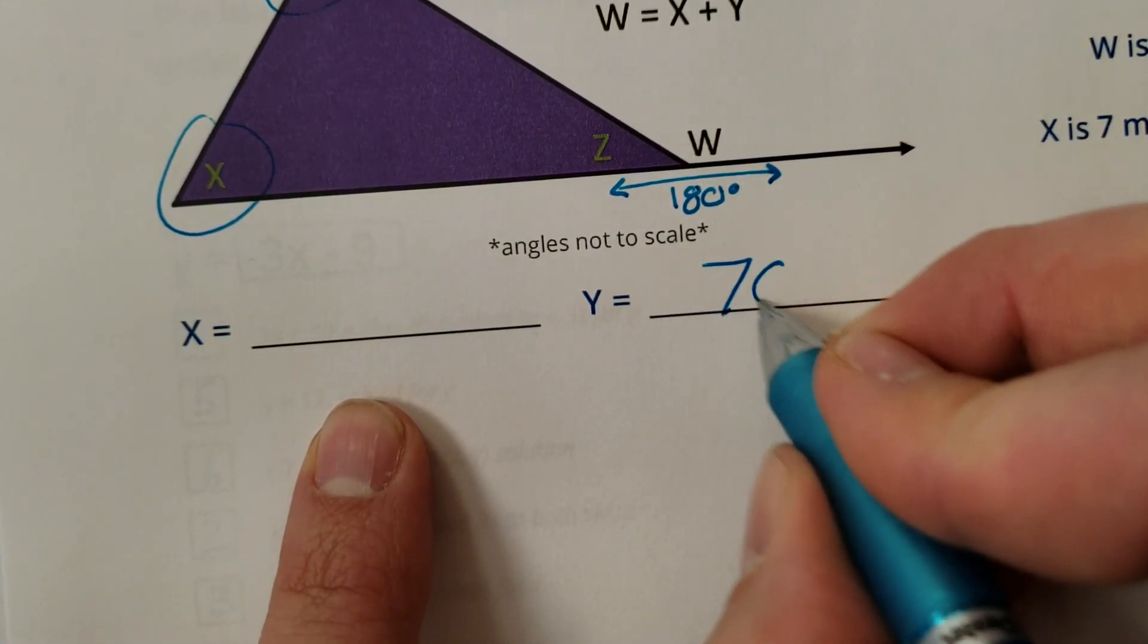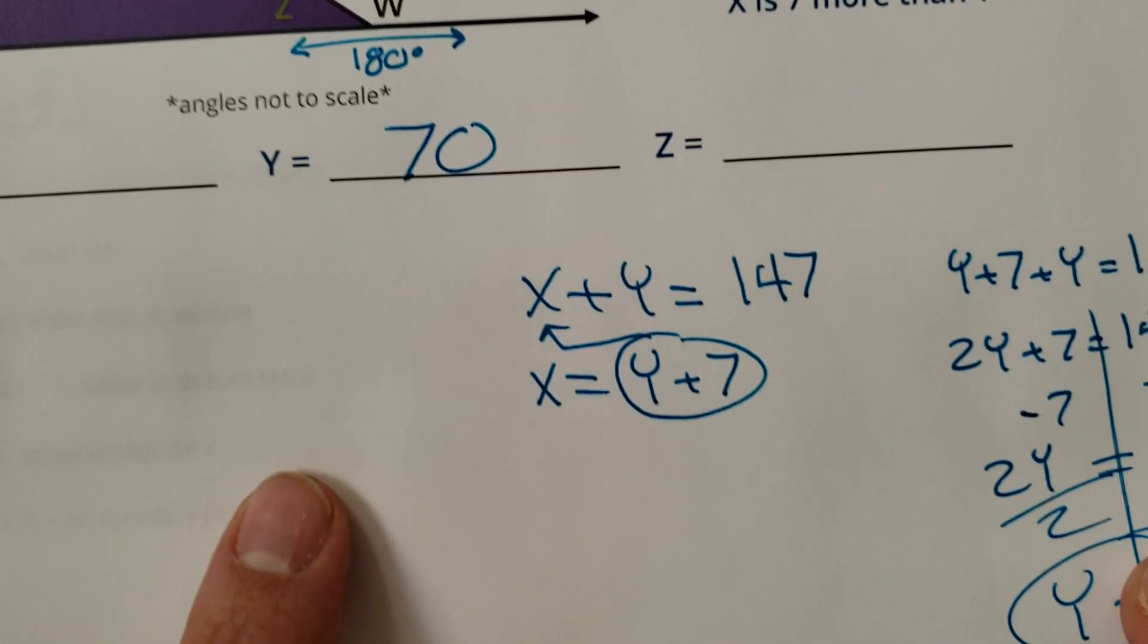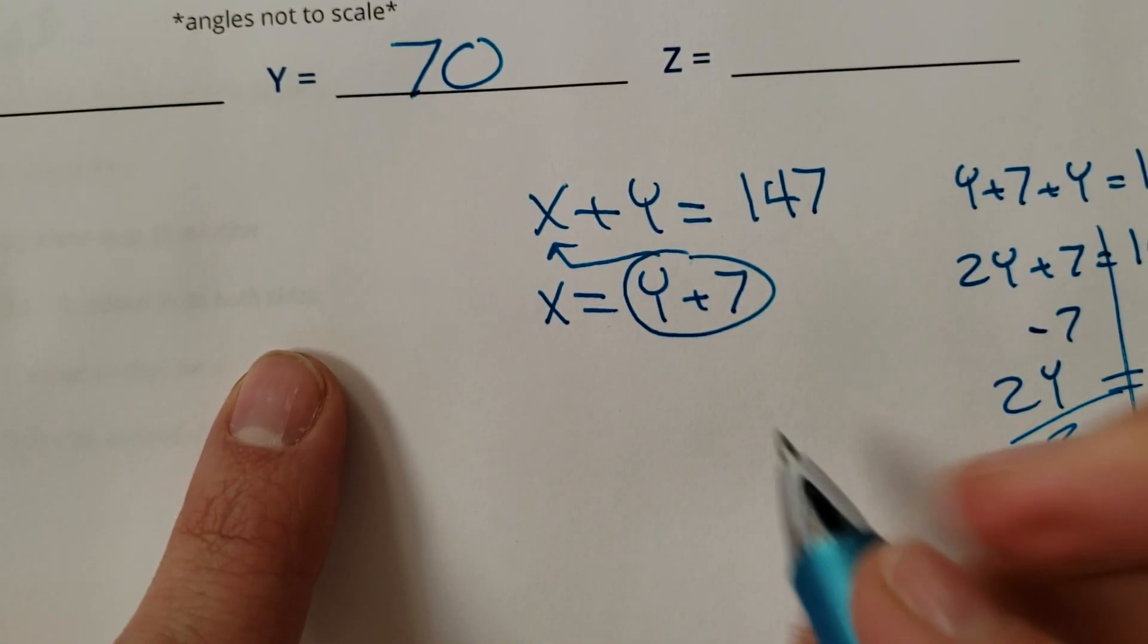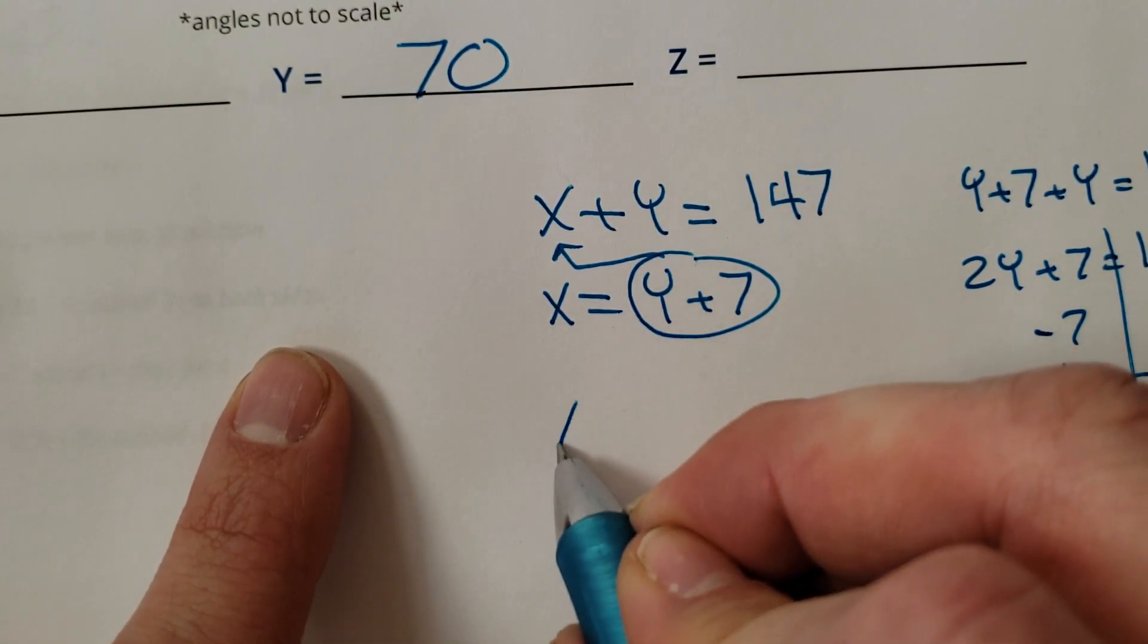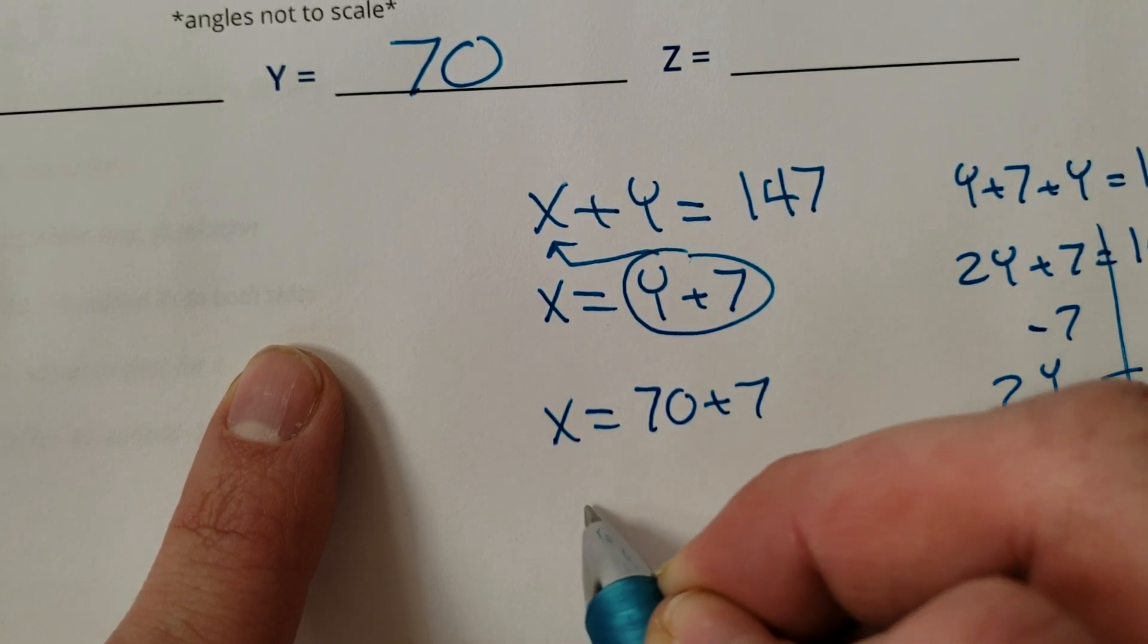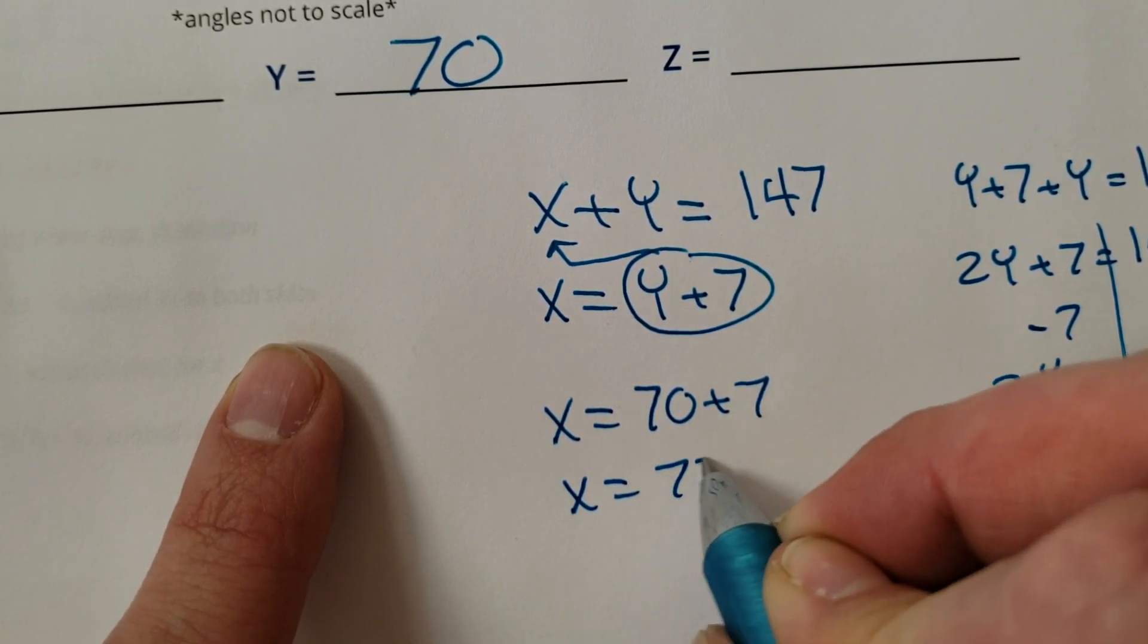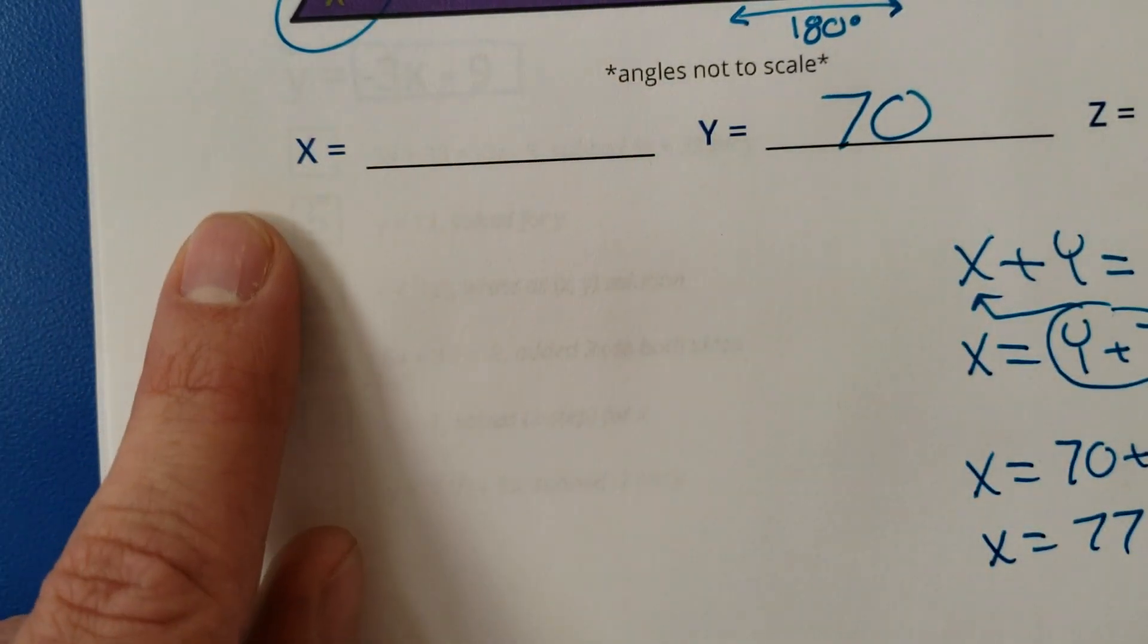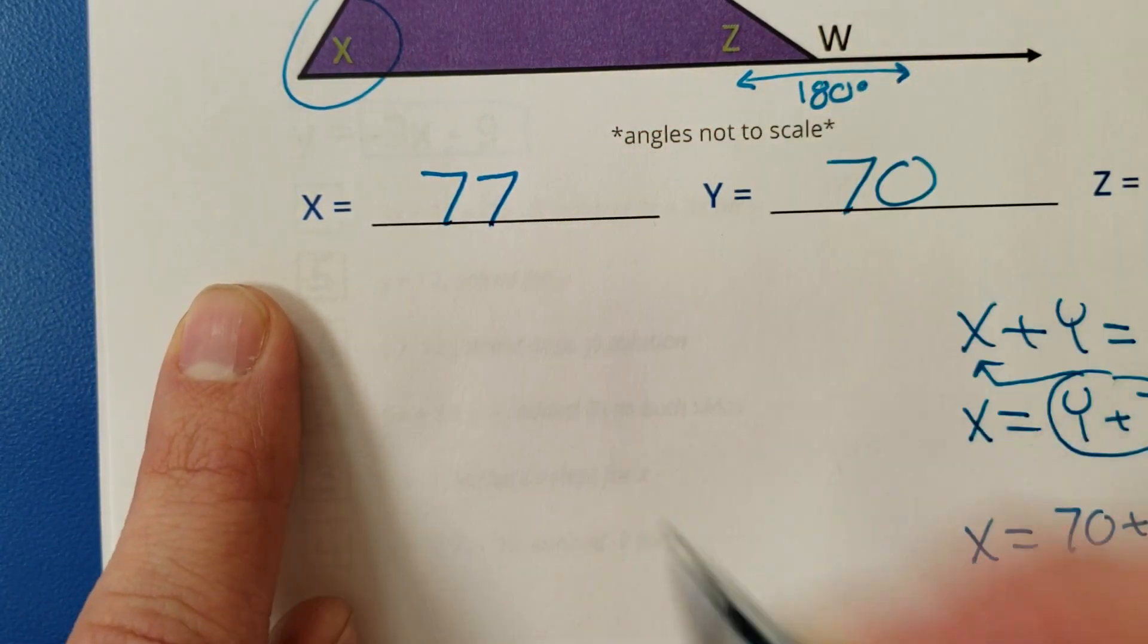Alright, so Y is 70. Now how can we find X? Well, here we go. Plug in a 70 right there. X equals 70 plus 7, so X is going to equal 77.